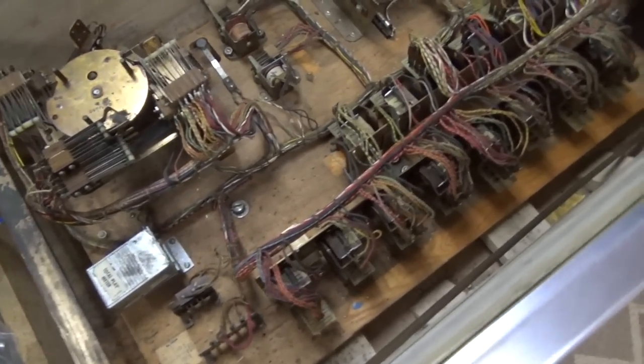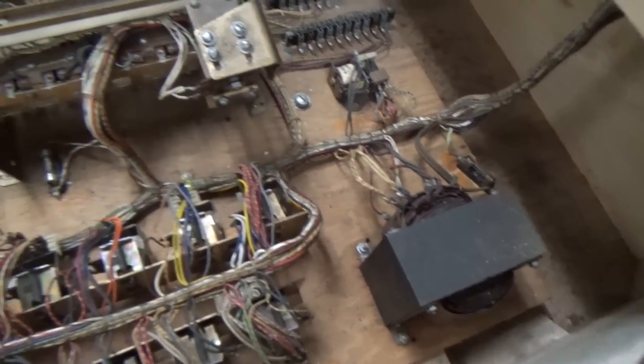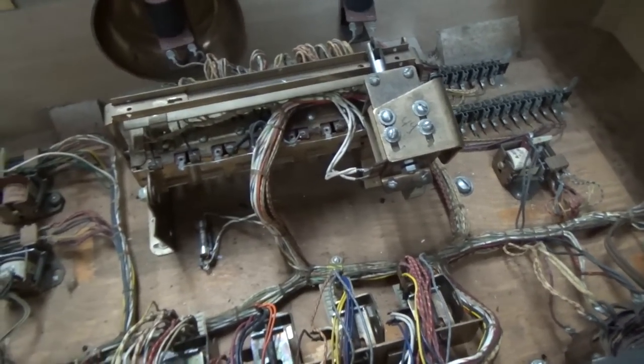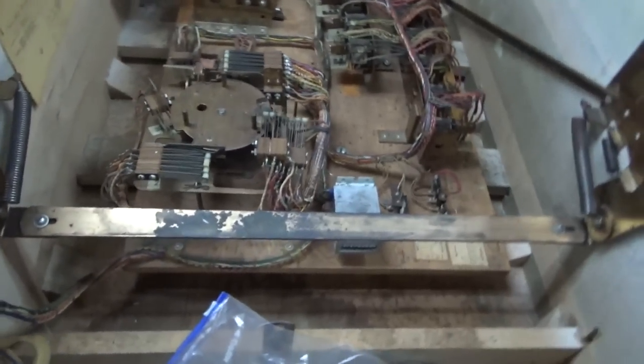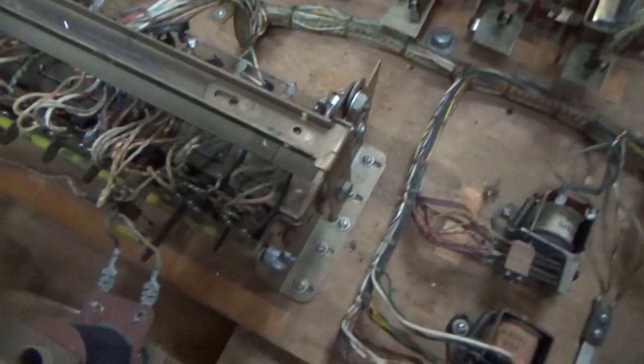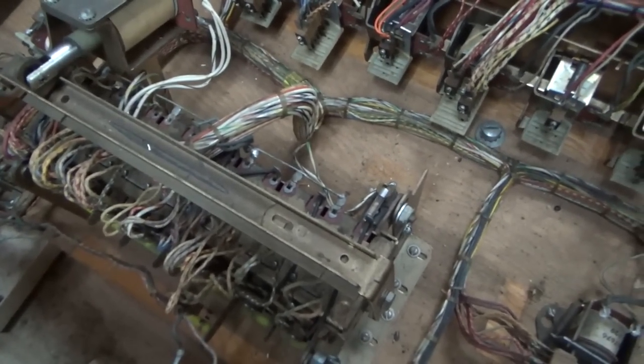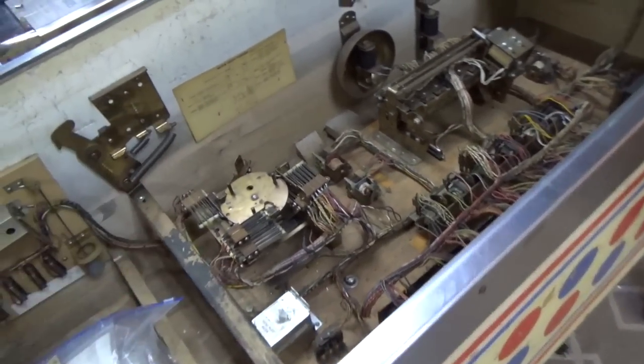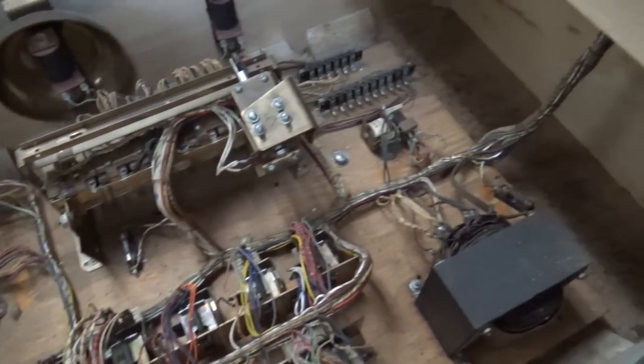We're unplugged. Got the playfield out. Everything looks pretty good, just filthy. I'm going to vacuum it up a little bit. I think when it starts, the game over relay is supposed to trip. We're missing some paper instructions, and without the schematics it's hard to tell what's what. The score motor shouldn't just continuously turn like that, so we've got issues.